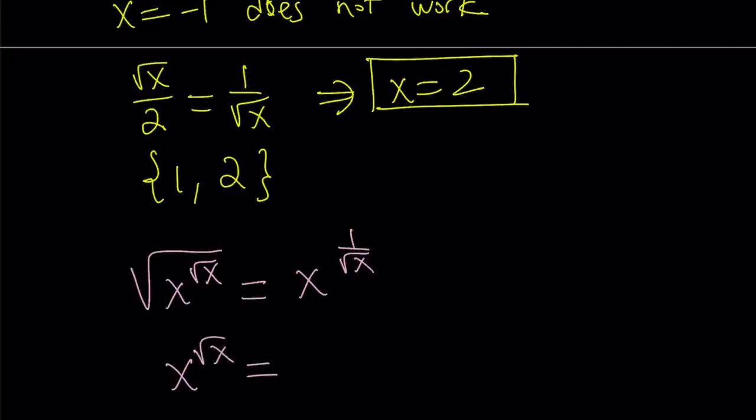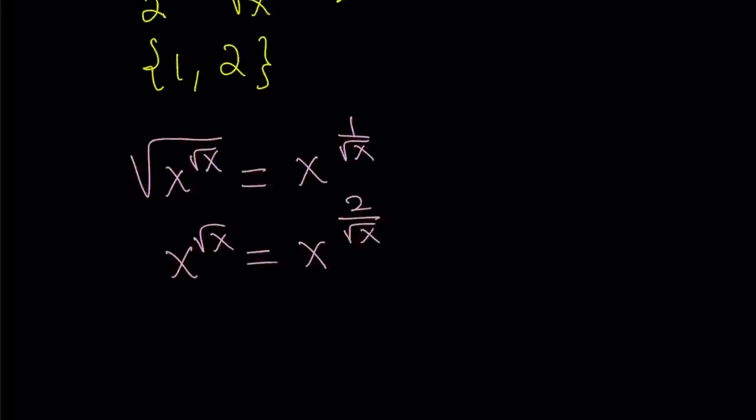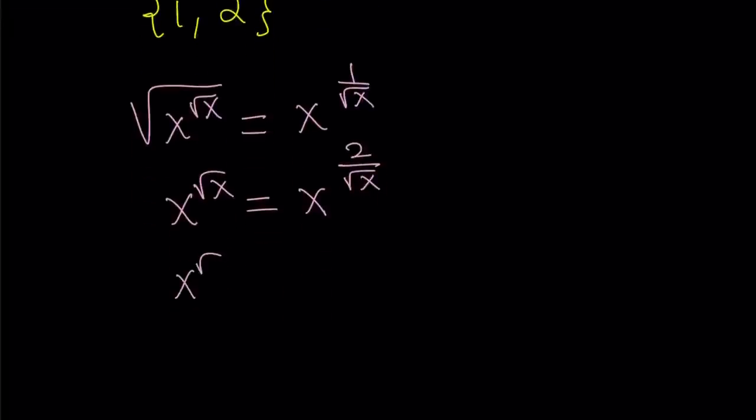That's going to give us x to the power of square root of x equals x to the power of 2 over square root of x. And then we can set the bases equal to each other. We can raise both sides to the power of square root of x. That's another approach that I kind of like. Let's raise both sides to the power of square root of x.